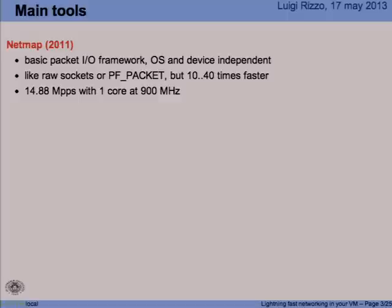The main tools we've been using are NetMap, something that was done a couple of years ago and presented here at BSDCan last year. It's a framework for doing packet I/O very, very fast. It is a standard part of BSD now. There is a loadable module for Linux, and you can do line rate on a 10 gig interface very, very easily.